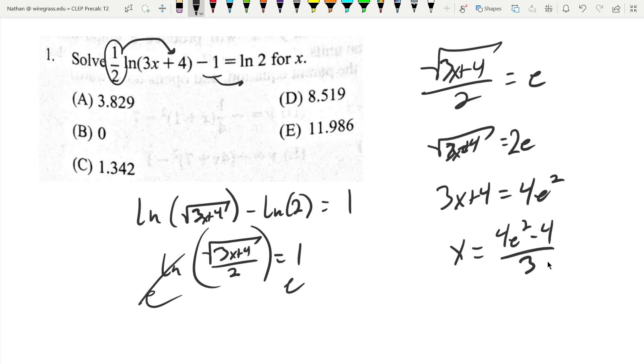So now I can plug that into my calculator. 4e to the power of 2 minus 4, and it looks like I get 8.52, answer D.